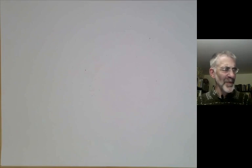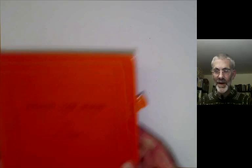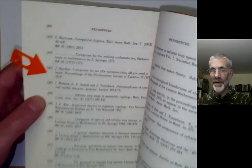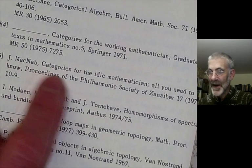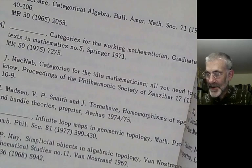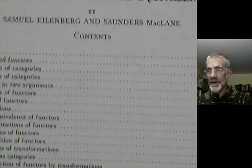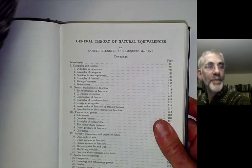The title of the book is a little bit funny and Saunders MacLane actually kind of got teased about this occasionally. For example, if you look at the book on infinite loop spaces by Frank Adams and look at the references, you will notice that one of the references is by John McNabb, 'Categories for the Idle Mathematician.' This reference doesn't actually exist, as you can tell from where it's published, and that was Adams just teasing Saunders MacLane a bit.